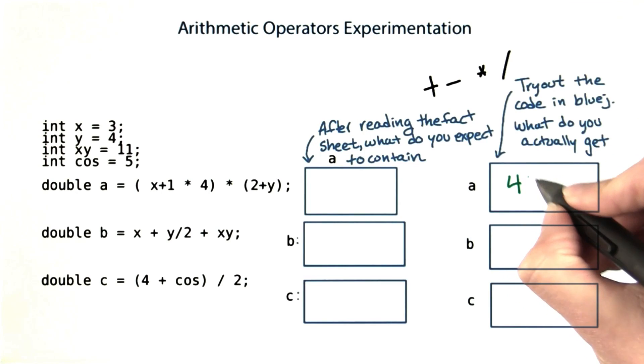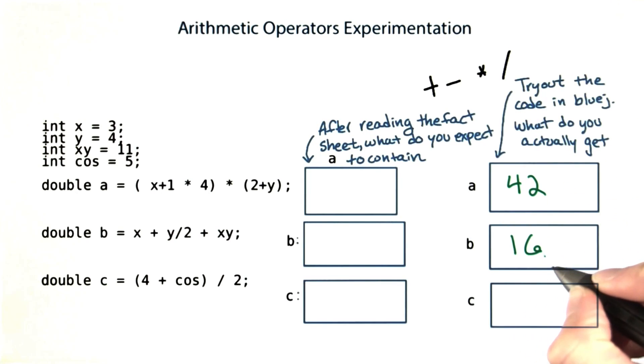These should have given 42, 16, and 4. This last one should have surprised you if you haven't coded before.